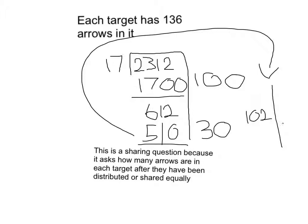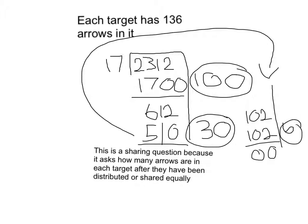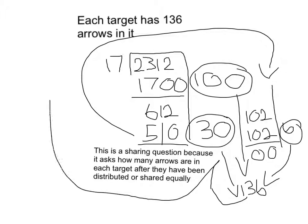So it would equal 102. 102 minus 102 equals 0. Now I add these three numbers up again, and they give me 136, and then I put that all the way up here, so 136. So the answer is 136, each target has 136 arrows in it.